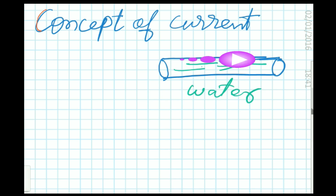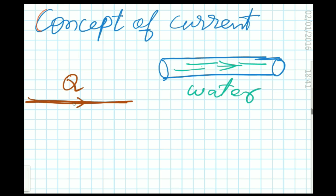Current flowing through a conductor means charge flowing through a conductor. I made the analogy of charge and water just to create an imagination in your mind — just like water flows through a tube, similarly charge flows through conductors. I will use this analogy to clarify the understanding of current electricity, and you will be very clear about current, voltage, potential difference, resistivity, and resistance after watching all my videos.